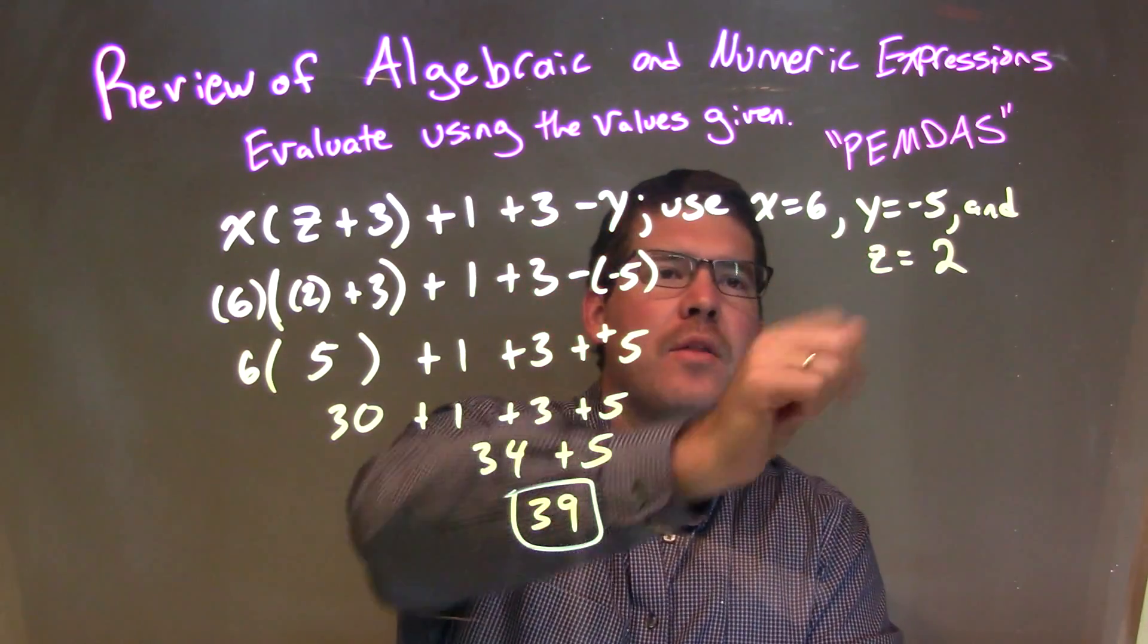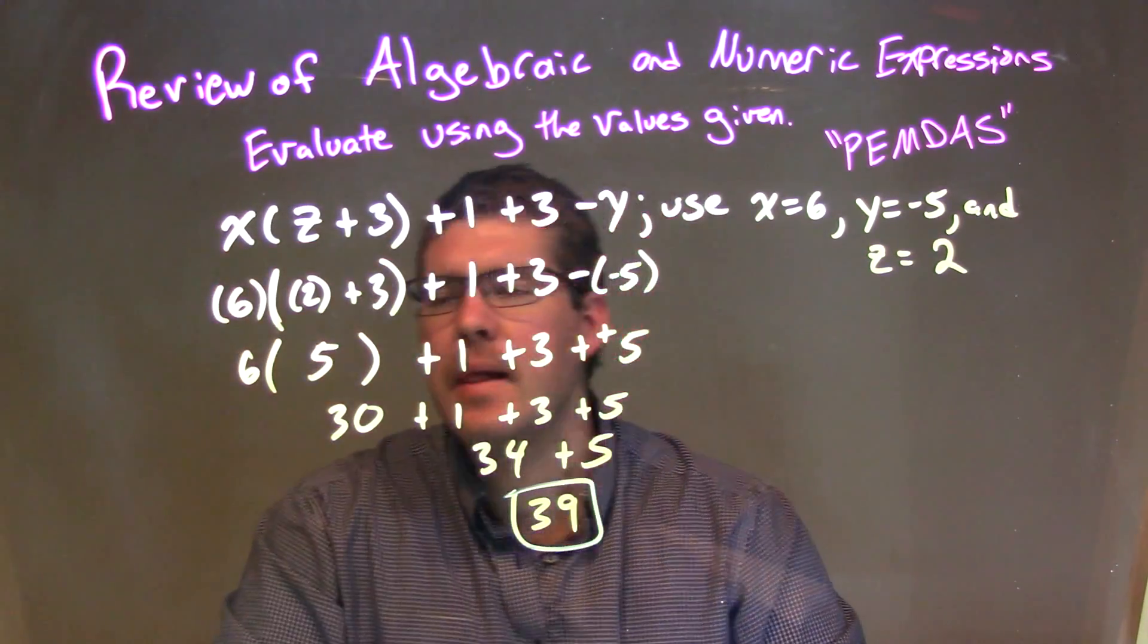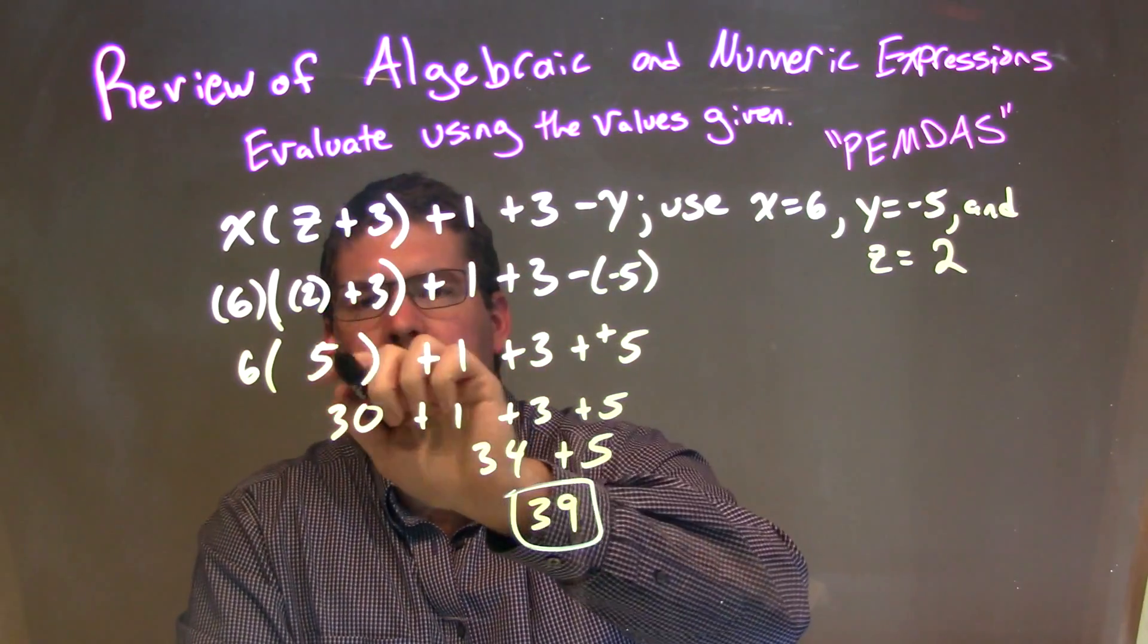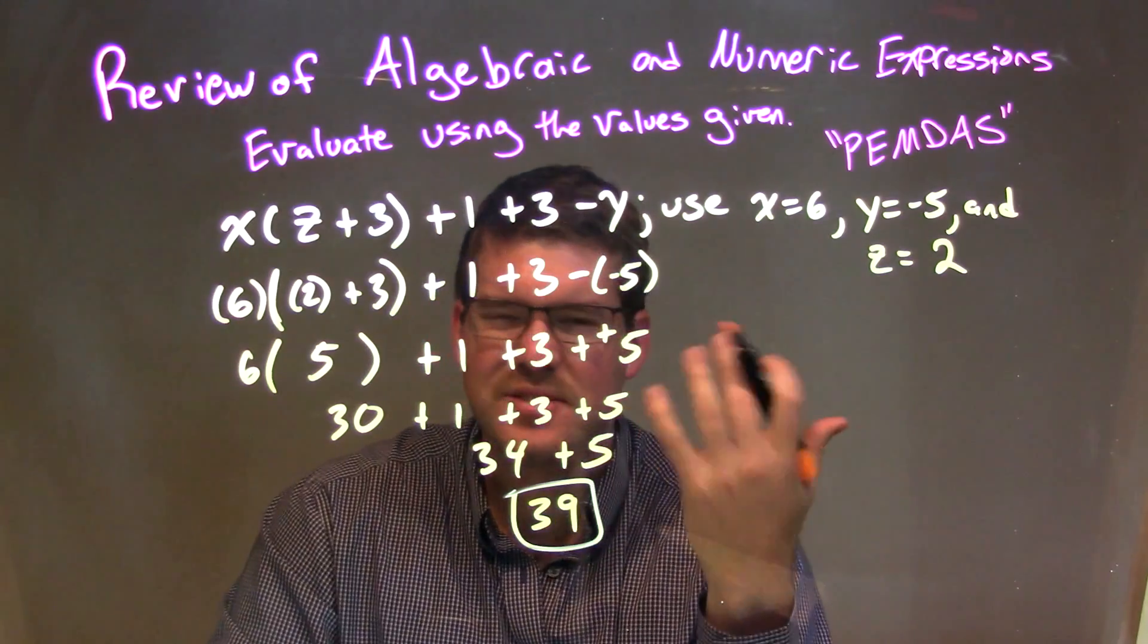When we substitute each one of those variables, x, y, and z, with the corresponding values, and when we substitute it, we put little parentheses around which ones I substituted in just to know that I did that.